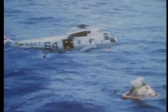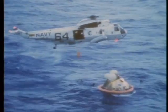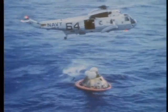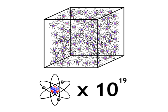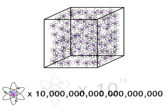At sea level, the earth's atmosphere has a density of 10 to the 19 atoms per cubic centimeter. For those who don't understand scientific notation, that's a one followed by 19 zeros. Yeah, that's a lot of atoms.